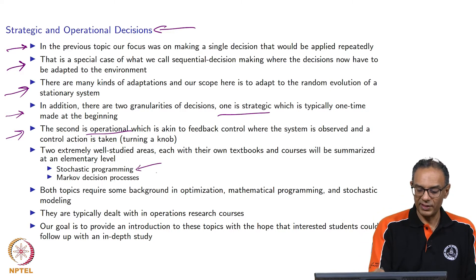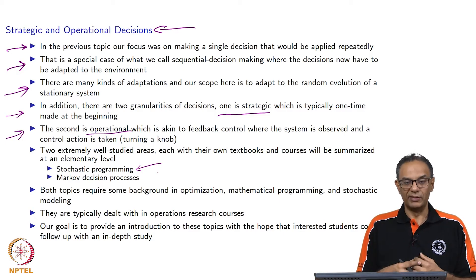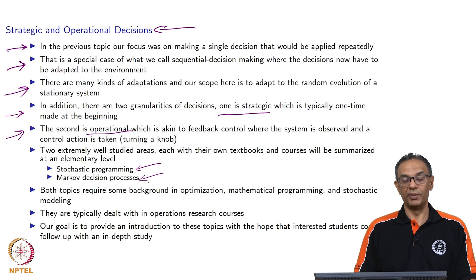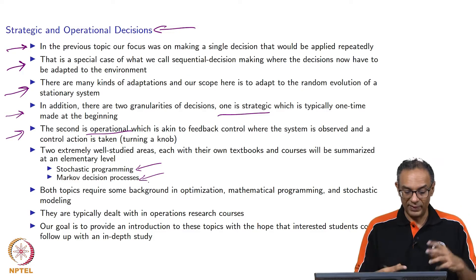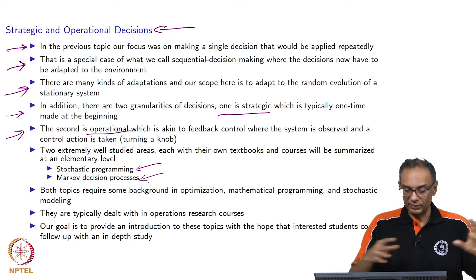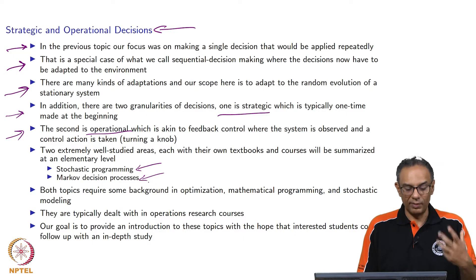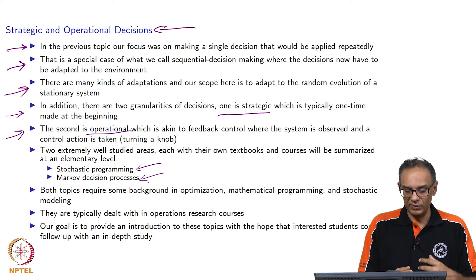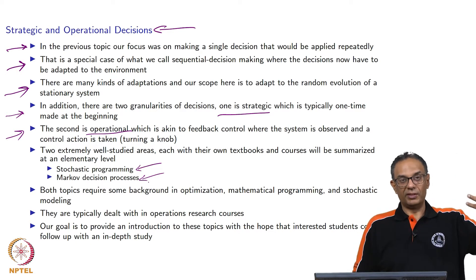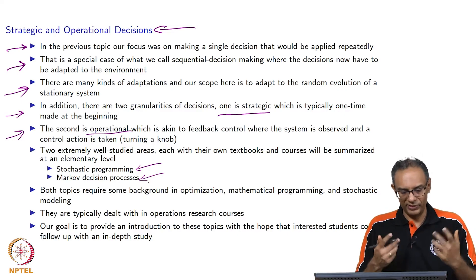These problems fall under a very large set of books and courses available in the literature. One area is called stochastic programming — the first three or four lectures will be on stochastic programming. Then the last few will be on Markov's decision process. These are two topics that evolved pretty much independently over time, with very little crossing between the two areas. However, they address somewhat similar problems. Stochastic programming has this notion of strategic decisions followed by operational ones, while Markov decision processes tend to be a lot more operational.